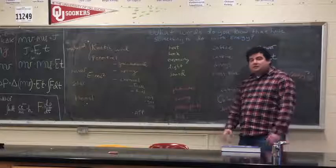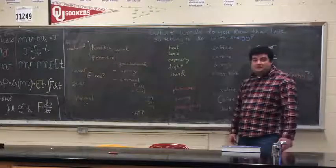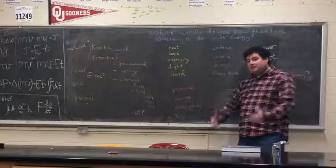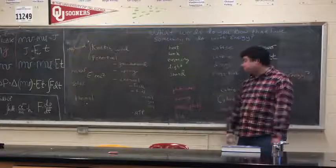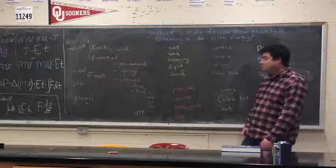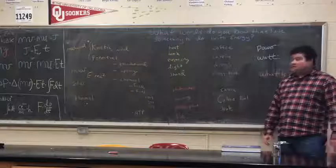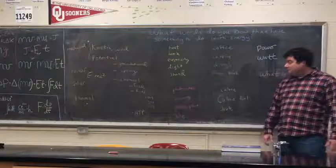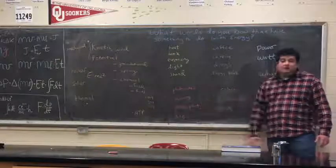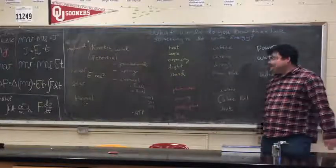In red, I've got transformations in energy that are important. Photosynthesis, that's when a plant turns light into chemical energy. It uses the energy in light to do work to make certain chemicals. Burning, that's when we light chemicals on fire and we release heat and turn them into different chemicals. A power plant takes one form of energy and usually transforms it into electricity.